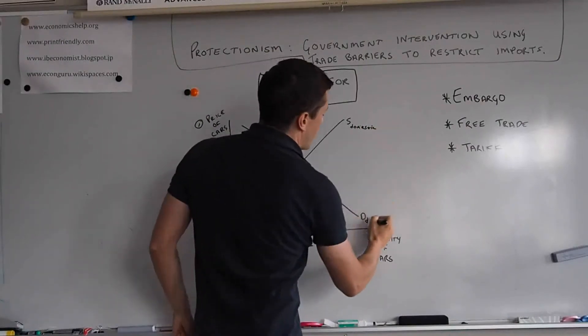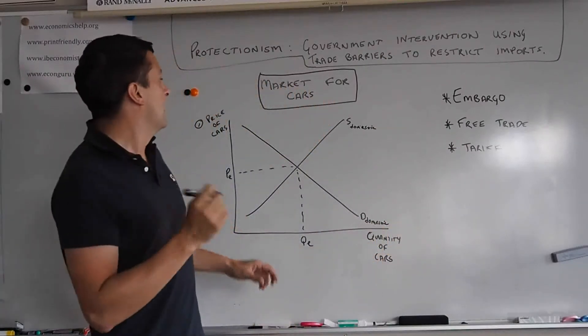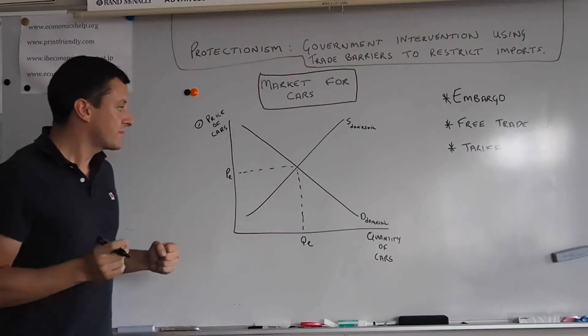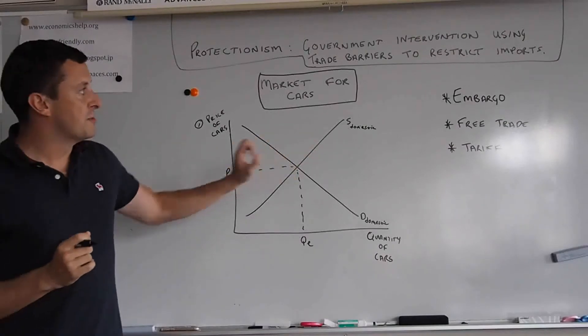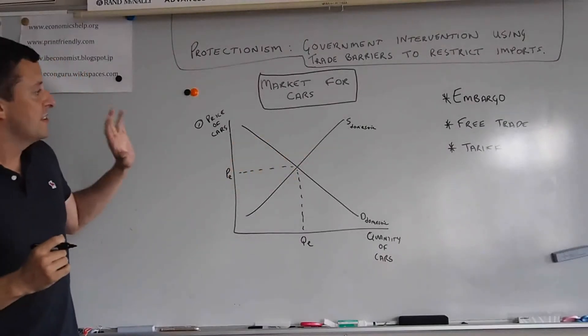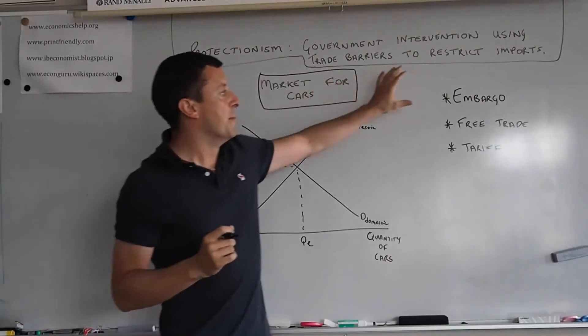So these are all the domestic producers and customers in the market for cars. Now in this first diagram, there's no world supply here. So this means that we have a situation called an embargo.